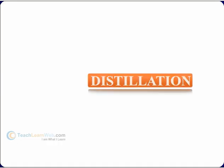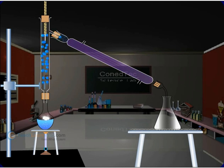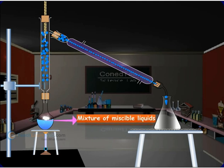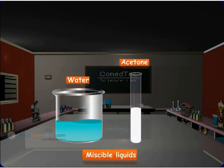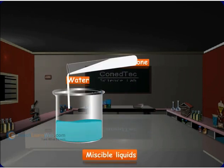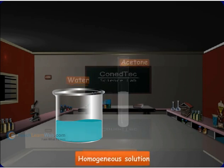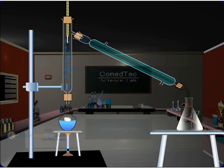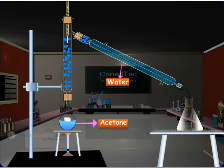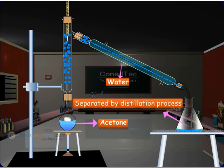Distillation is used to separate the components of a mixture which contains two miscible liquids. Miscible liquids are the ones which can mix in all proportions to form a homogeneous solution. Acetone and water can be separated by a distillation process.